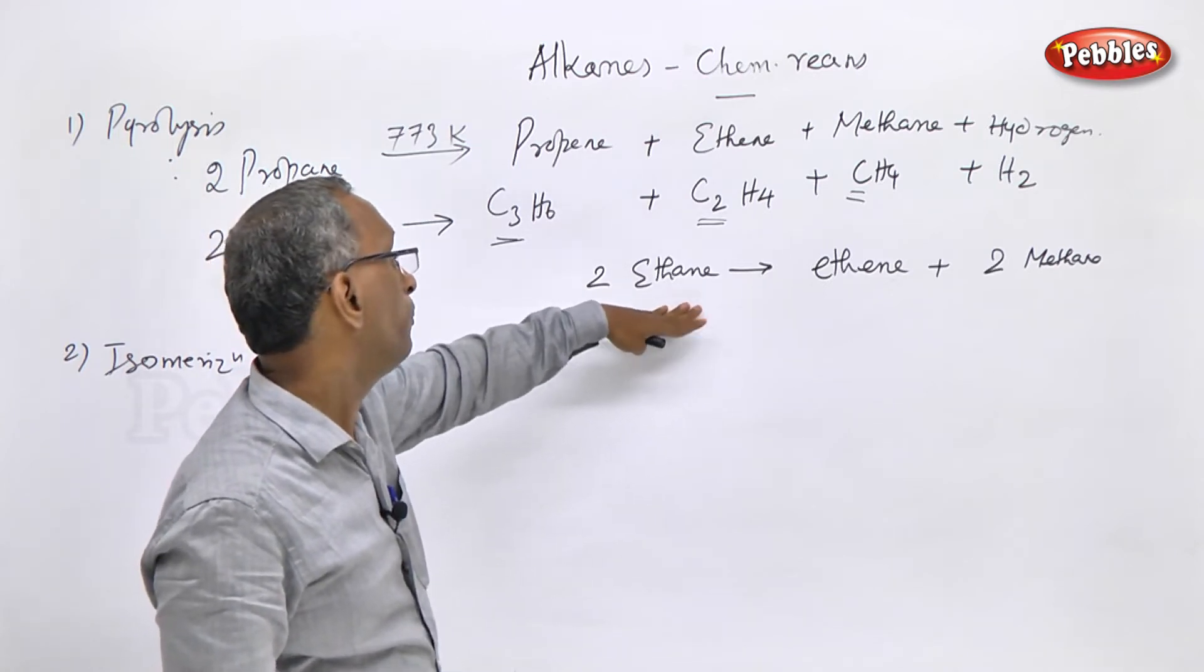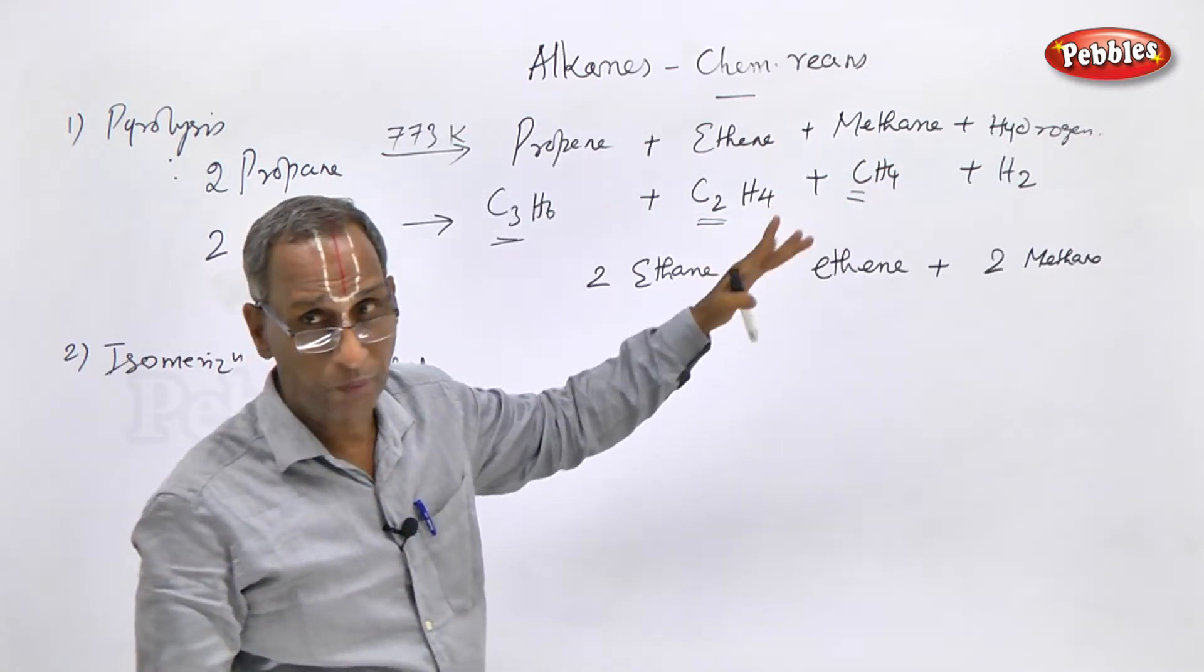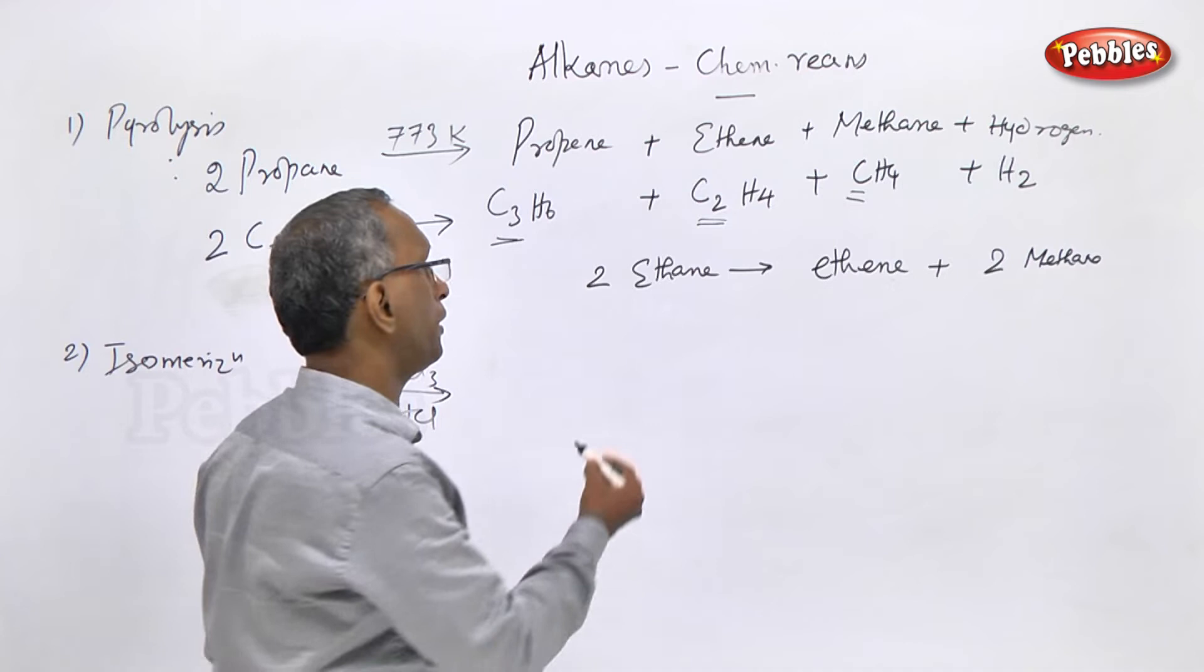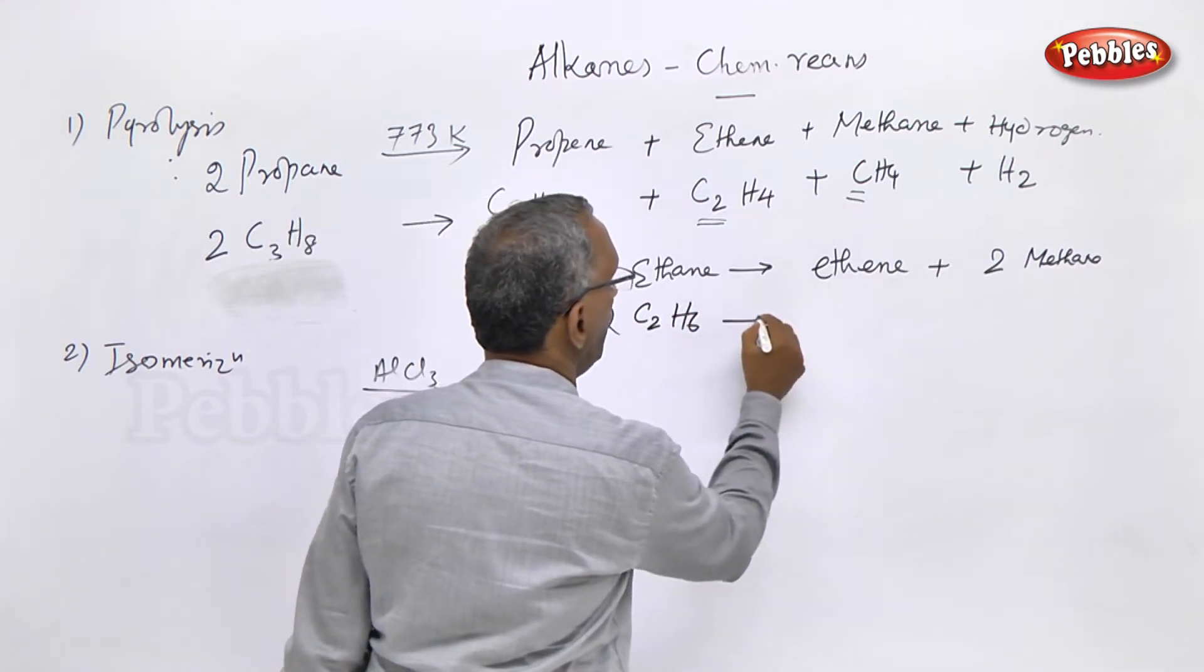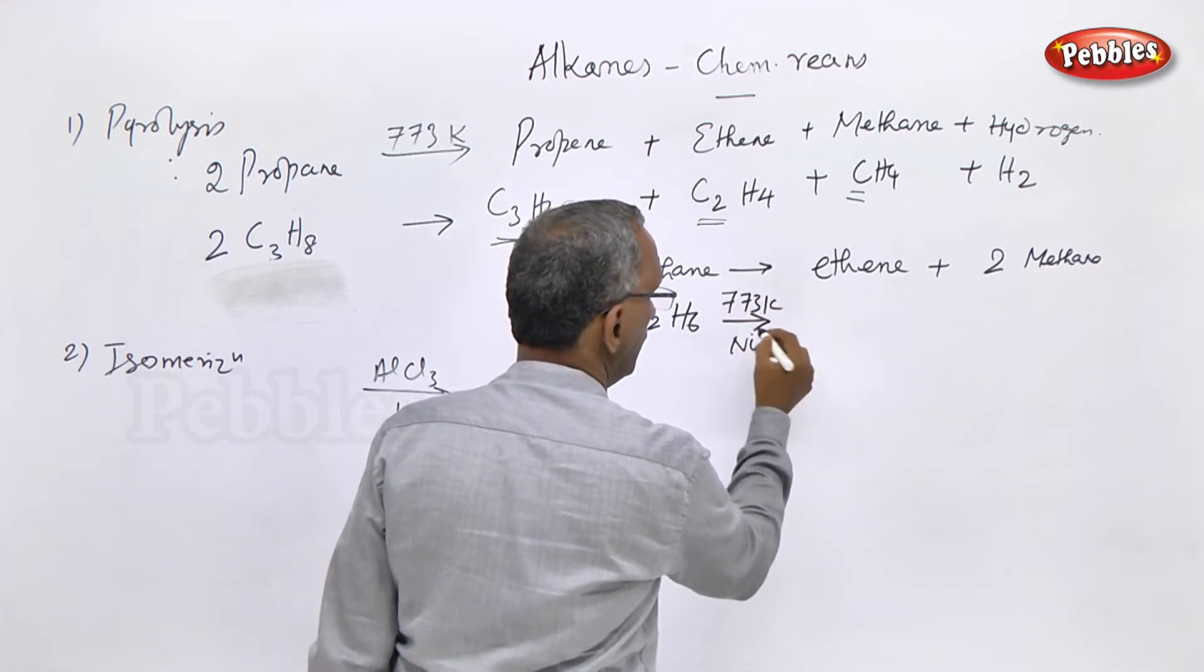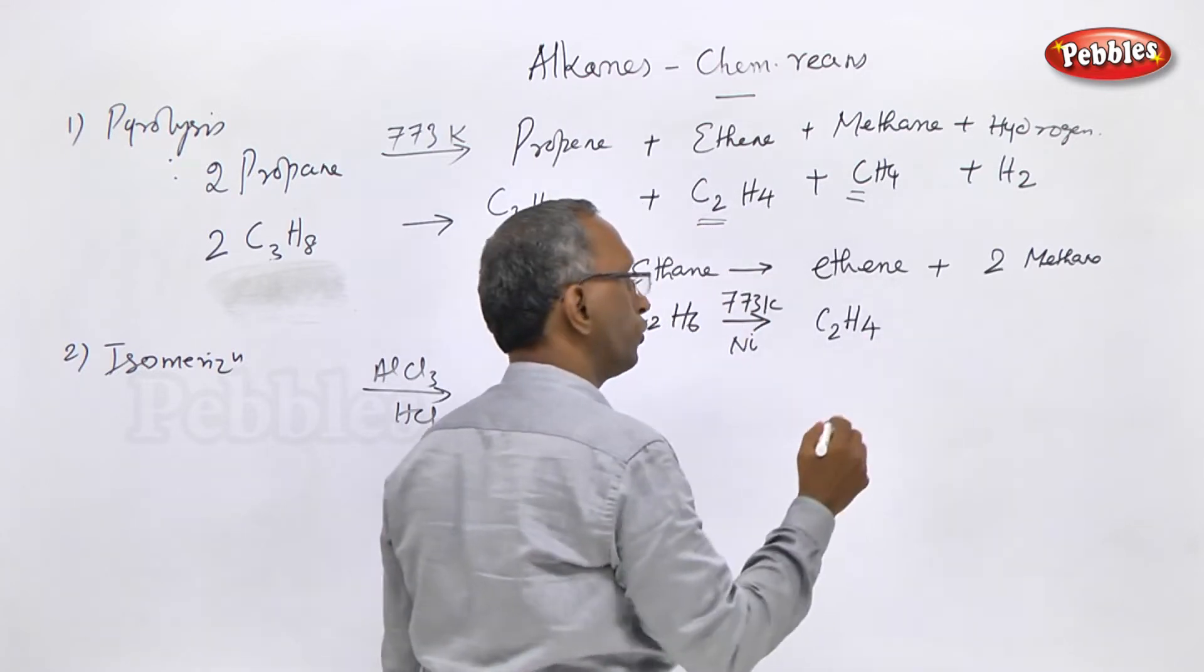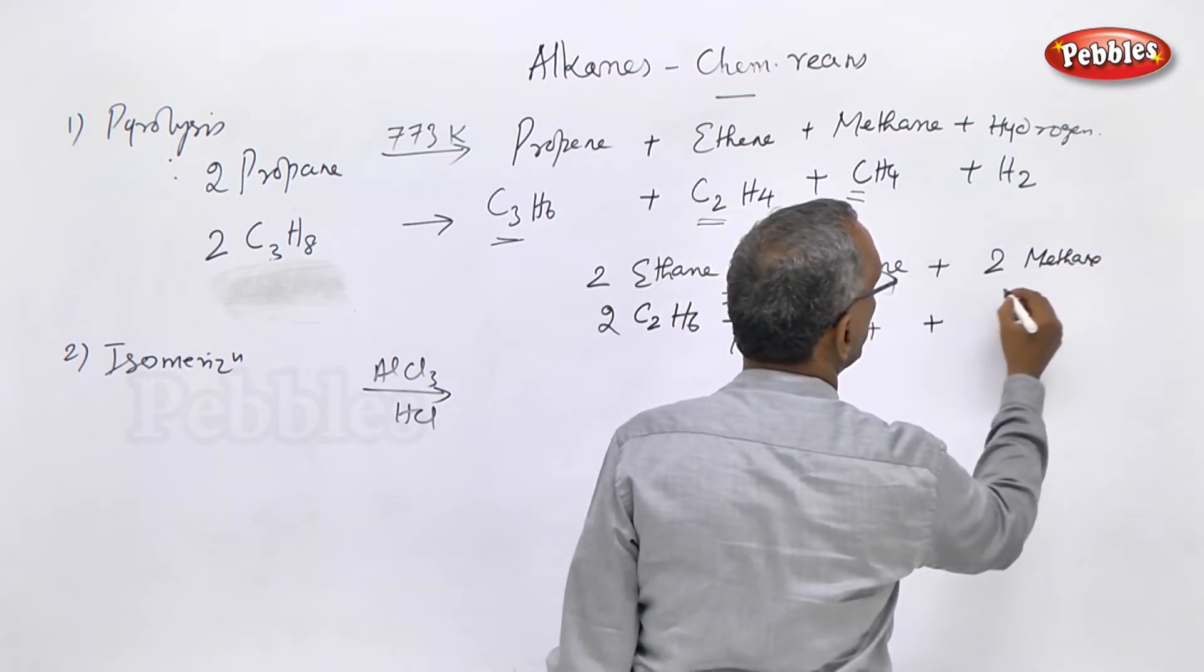The simplest example starting from methane: on pyrolysis gives carbon. The next higher alkane is ethane. Two moles of ethane C2H6 on pyrolysis at 773 Kelvin in the presence of nickel catalyst gives a mixture of ethene or ethylene C2H4 plus 2 moles of methane CH4.